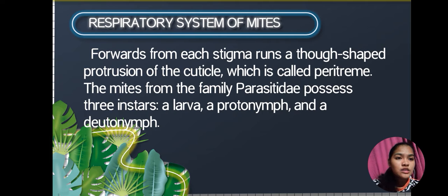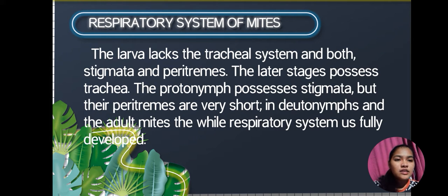From each stigma runs a dough-shaped protrusion of the cuticle called the peritrim. Mites from the family Parasitidae possess a larva, a protonymph, and deutonymph. The larva lacks the tracheal system and both stigmata and peritrims. The later stages possess trachea — the protonymph possesses stigmata but their peritrims are very short — and the deutonymph and adult mites have the respiratory system fully developed.